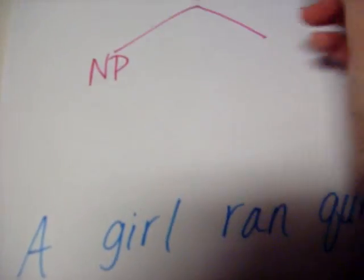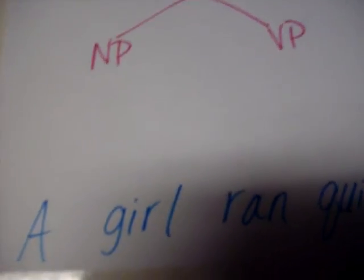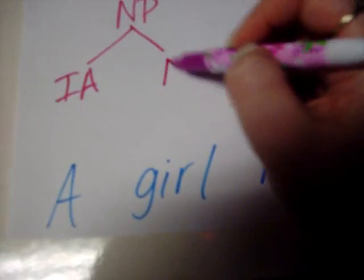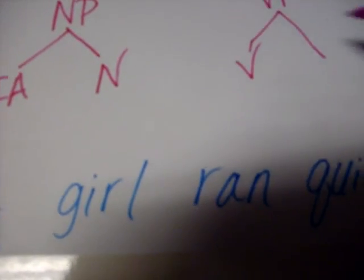In our third sentence, we have 'a girl ran quickly.' We have our sentence with our two parts: the noun phrase and the verb phrase. We have our basic noun phrase again, this time with an indefinite article and our central noun. And in the verb phrase, this time we have the verb and an adverb, because the girl ran quickly.